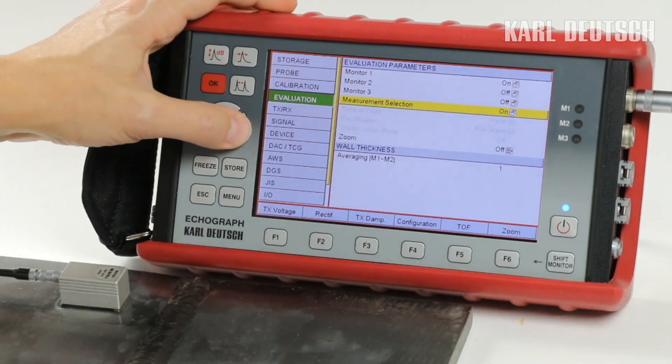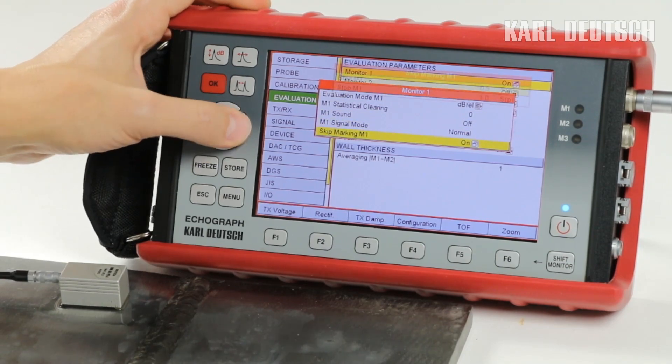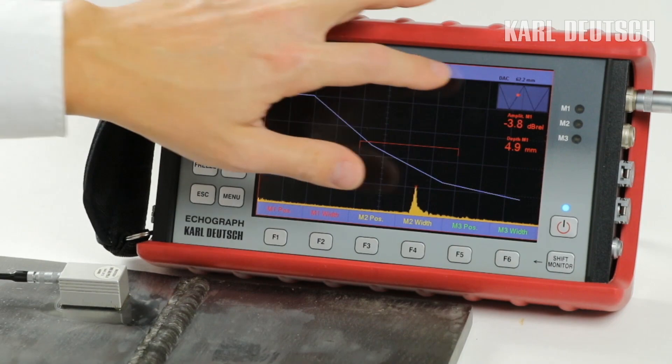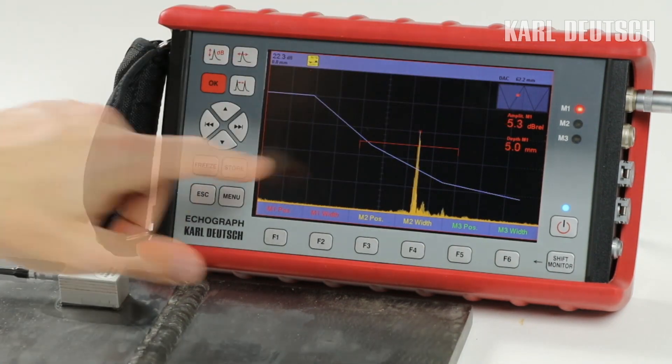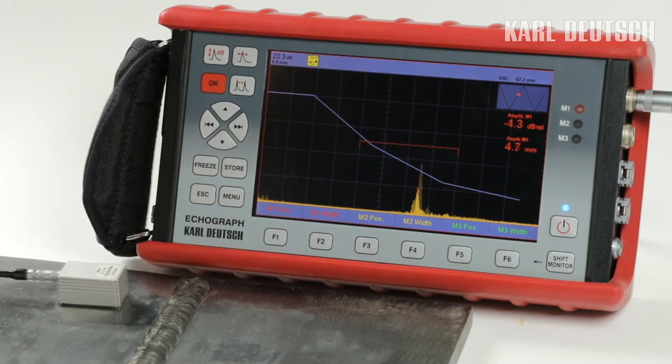Helpful for the evaluation of indications is the skip information and the marking of full and half skips. The skip information shows the position of the indication on the sound path, while the skip marker automatically places the monitor on the path between half and full skip.